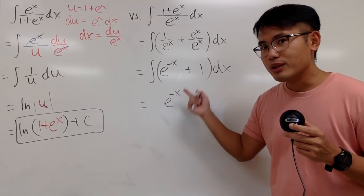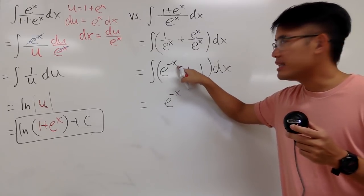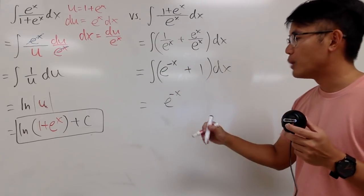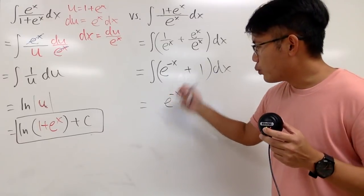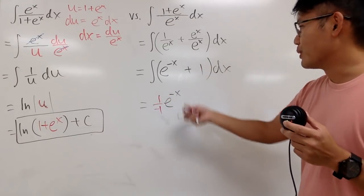And we are doing the reverse chain rule, pretty much, right? So I'm going to divide it by the derivative of negative x. In other words, I will have to divide it by negative 1. So I'll put down 1 over negative 1. And that's pretty much it for the integral right here.